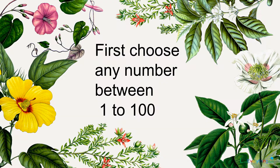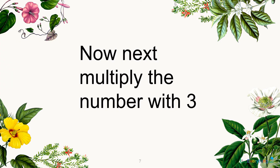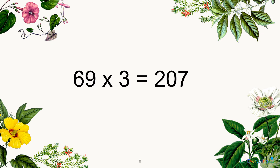Now let's see. First, choose any number between 1 to 100. For example, let's take the number 69. Next, multiply the number by 3. So we multiply 69 by 3, which gives us 207.